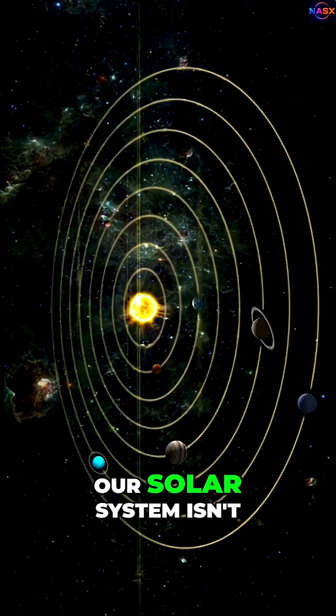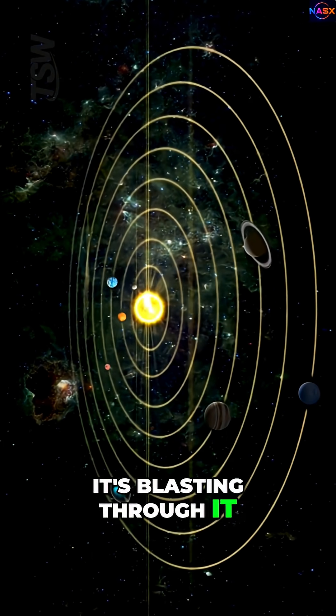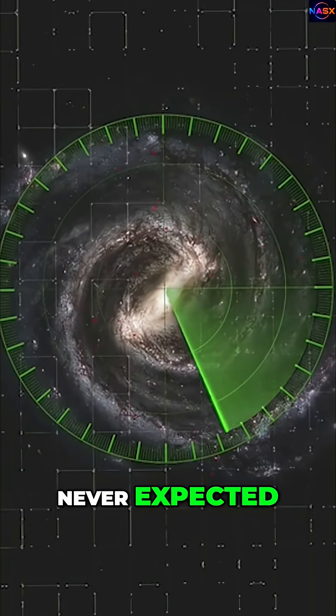Guess what? Our solar system isn't just drifting through space, it's blasting through it at a speed scientists never expected.